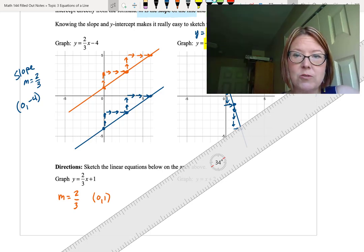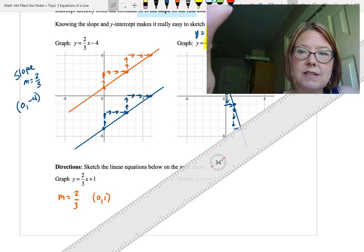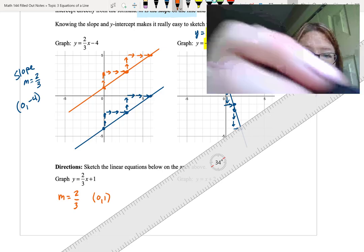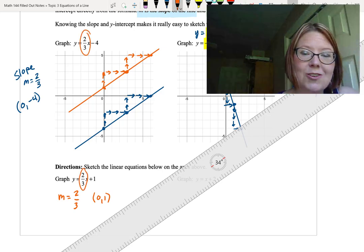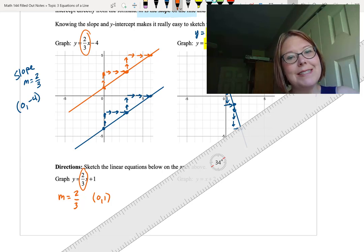You might realize that this new line we've drawn is actually parallel to the first line we drew. The reason those two are parallel is because they actually have the same slope, that two-thirds slope. They have the exact same steepness, which means they're parallel. In fact, we could define parallel lines as lines that have the same slope.